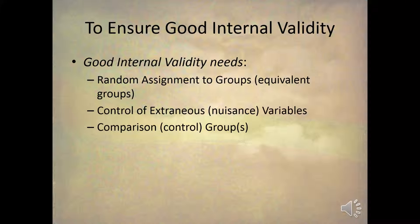To ensure good internal validity, a study needs three things: random assignment to groups or equivalent groups; the control of extraneous variables — nuisance variables; and comparison groups. So let's look at these three categories individually.